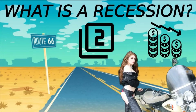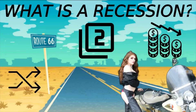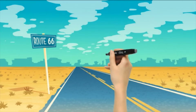However, the National Bureau of Economic Research (NBER), which officially declares recessions, says two consecutive quarters of decline in real GDP are not how it is defined anymore. The NBER defines a recession as a significant decline in economic activity spread across the economy lasting more than a few months, normally visible in real GDP, real income, employment, industrial production, and wholesale-retail sales.